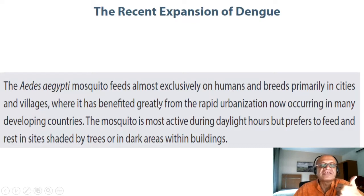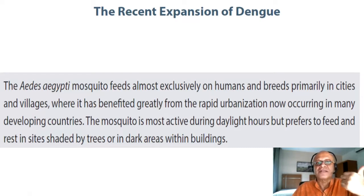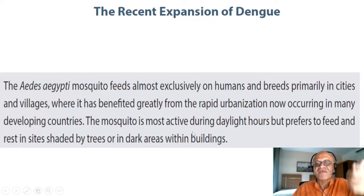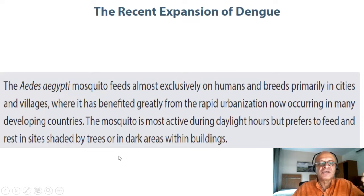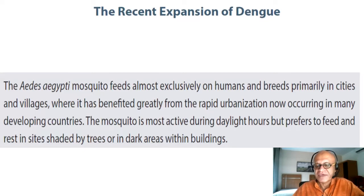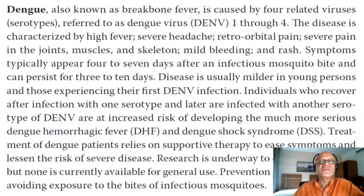The mosquito breeds primarily in cities and villages, not in the wild. So you have to consider climate factors that affect urban areas and villages — habitats with trees and dark areas in buildings. Let's look at how this disease manifests itself.